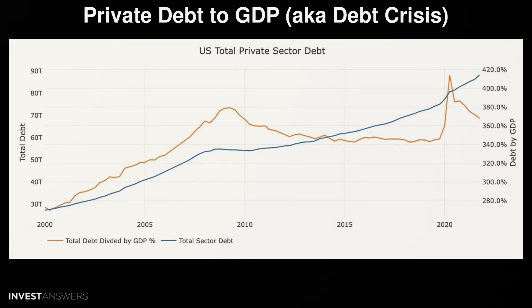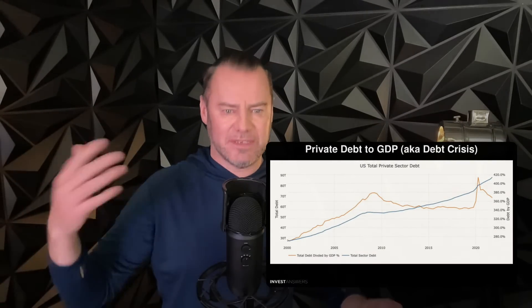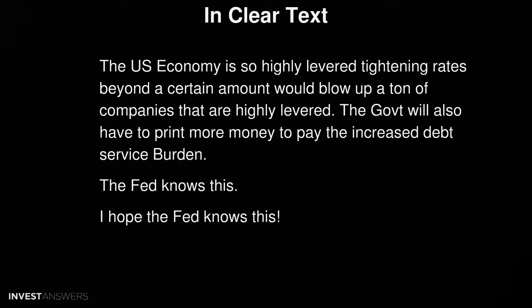Forget government debt — this is private debt to GDP ratios. Government debt to GDP is about 130%, but private debt to GDP today is about 370%. The US is a heavily leveraged place, and we need GDP to grow or else we spin into a debt crisis. Quick summary: the US economy is very highly leveraged both publicly and privately, and tightening rates beyond a certain amount would blow up tons of highly leveraged companies. The government will also have to print more money to pay the increased debt service burden. The Fed knows this.